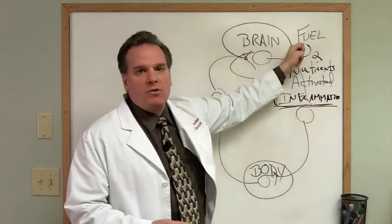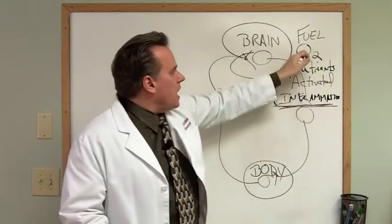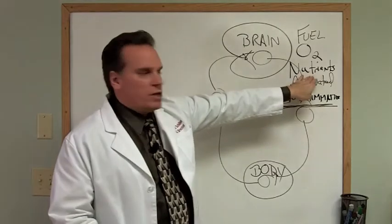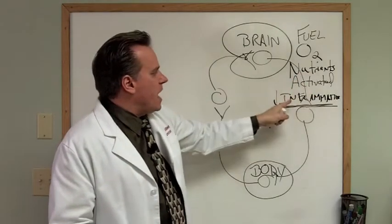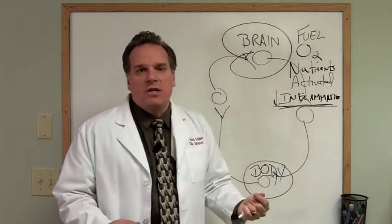In order to feed those nerves and allow them to function well, for them to have these loops functioning well, they need to have proper levels of glucose, which is sugar, oxygen, the appropriate amount of nutrients, and they need to be activated and have an environment that lacks inflammation.